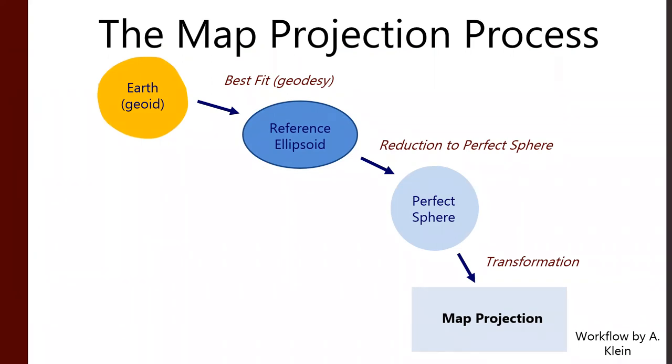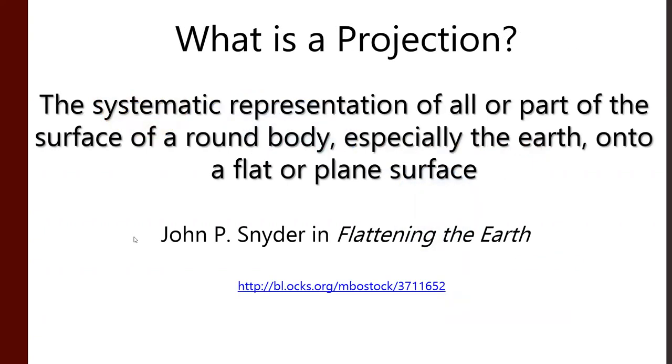From there, we still have to make a map. And that's the next two pieces of the puzzle here. Our reference ellipsoids are reduced to a perfect sphere. Now, the reference ellipsoid can be a perfect sphere. There are some spherical models of the earth that work just fine as a generalization. And then we take that three-dimensional sphere and we transform it into a flat map. That transformation is where all the problems start to happen.